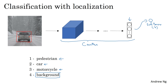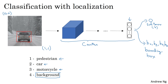To localize the car in the image as well, you can change your neural network to have a few more output units that output a bounding box. In particular, you can have the neural network output four more numbers: bx, by, bh, and bw. These four numbers parameterize the bounding box of the detected object. The upper left of the image is the coordinate (0, 0) and the lower right is (1, 1). Specifying the bounding box requires specifying the midpoint (bx, by), as well as the height bh and the width bw of the bounding box.